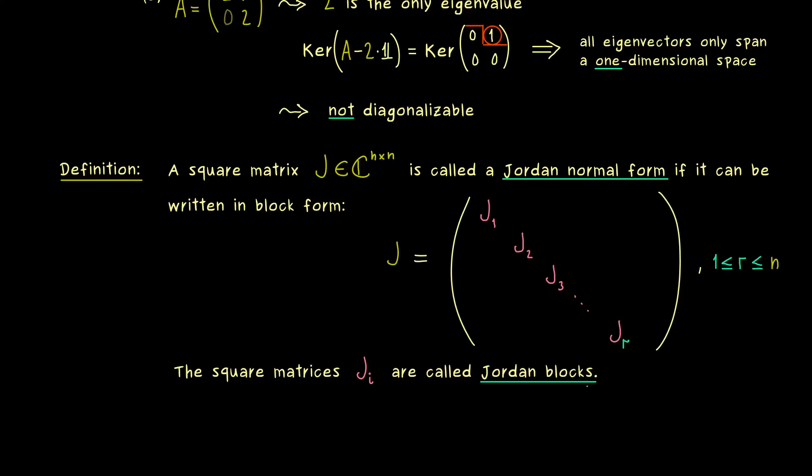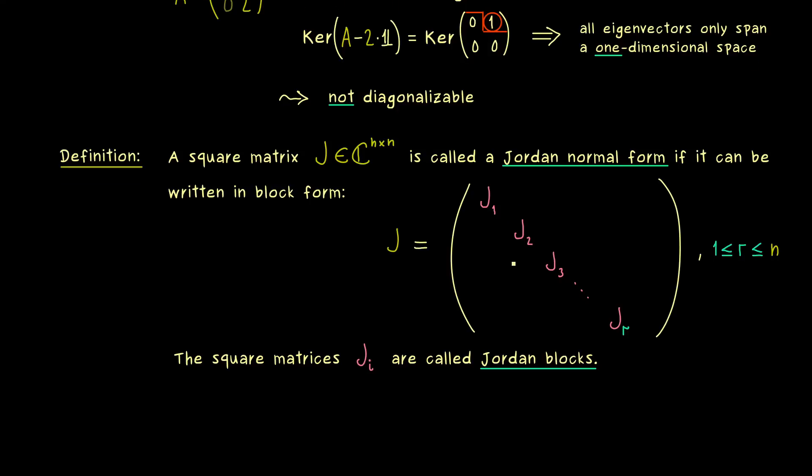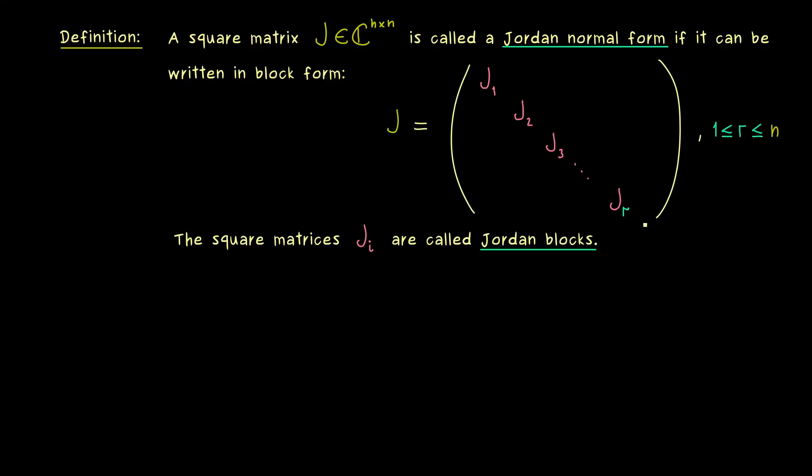Now this is important, because these Jordan blocks are block matrices again. That means if we take a block out, then this block can be decomposed into square matrices again. Hence every Ji has square matrices on the diagonal as well.